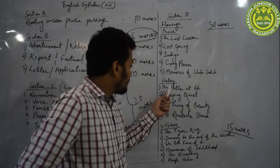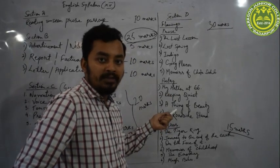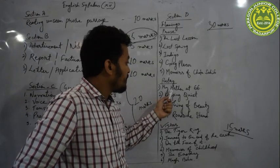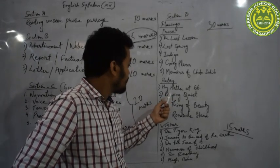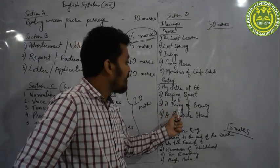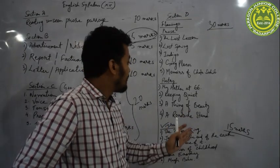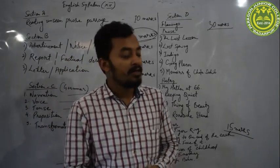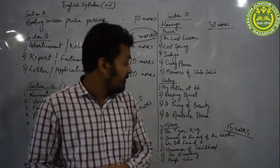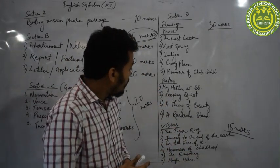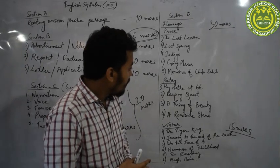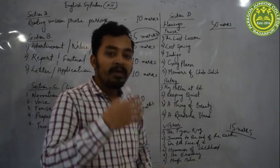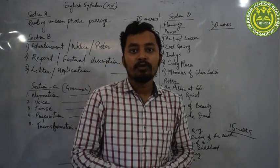Moving on to the poetry section, there are four poems included in the syllabus. The first poem is 'My Mother at 66,' second poem 'Keep Quiet,' third 'A Thing of Beauty,' and fourth 'A Roadside Stand.' These are the four poems included in your syllabus. All the poems are very interesting. One poem video lecture is already provided to you — the rest will be provided to you soon.